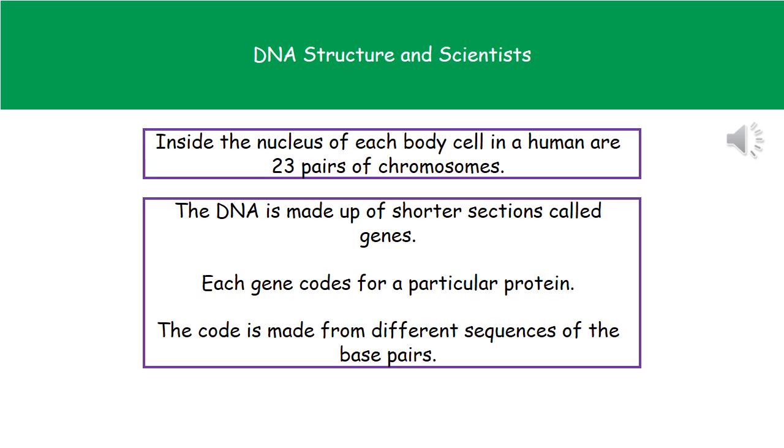When we think about humans, inside a normal body cell, humans have 23 pairs of chromosomes. That's 46 individuals or 23 pairs. Different organisms will have different numbers, so be careful if they ask you questions about how many chromosomes you'd find in particular cells. Make sure you read the information in the question because sometimes it won't be about humans.